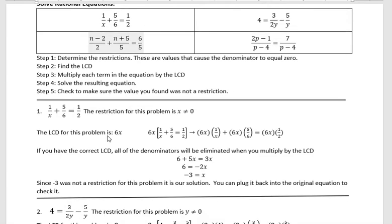For the first problem, the restriction is x cannot be zero, because if we had x equal zero, we would have an undefined expression right here. The LCD for this problem, the common denominator for 6 and 2 is 6, and then we also have that x. So the LCD is 6x.